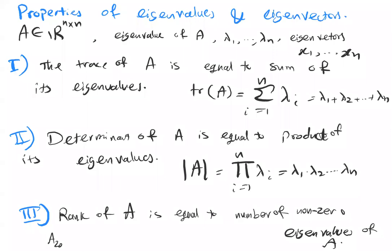For example, if you have a 20×20 matrix and find all its eigenvalues, and only five of the lambdas are non-zero, then without directly checking you can say the rank of A is five.